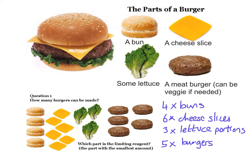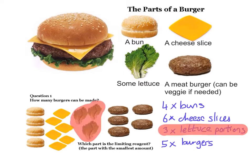So if you look very closely, you can see that you can only really make three burgers. Why is that? Because your limiting reagent, in this particular case, is the lettuce. You only have three samples of lettuce, three portions of lettuce, so therefore you can make three burgers.